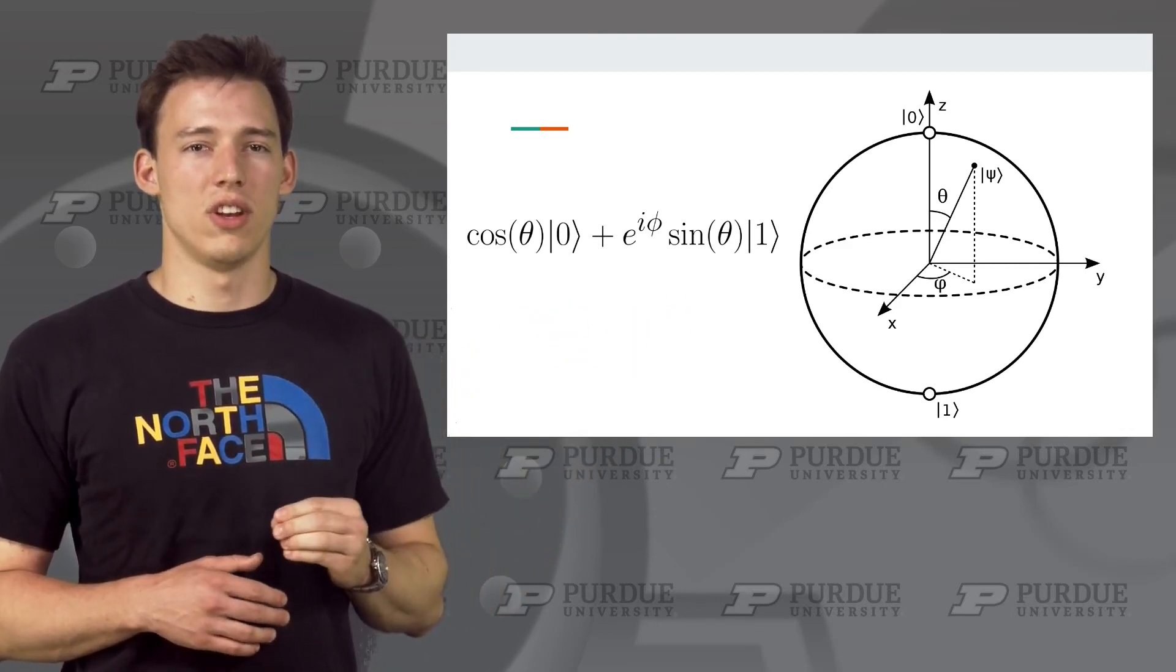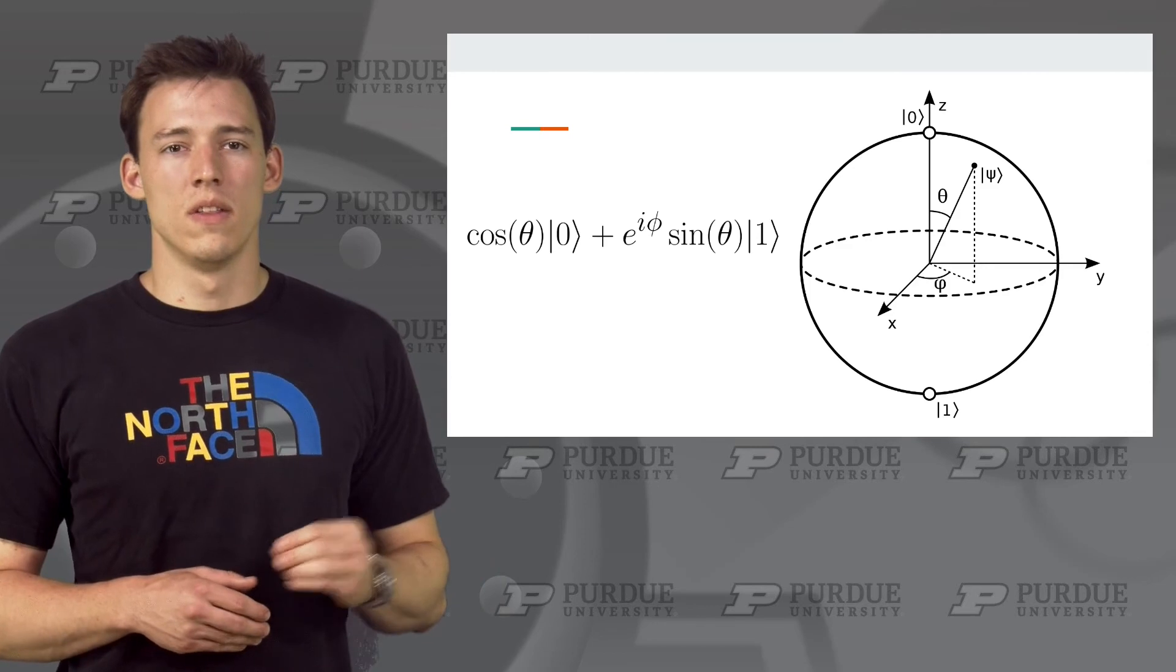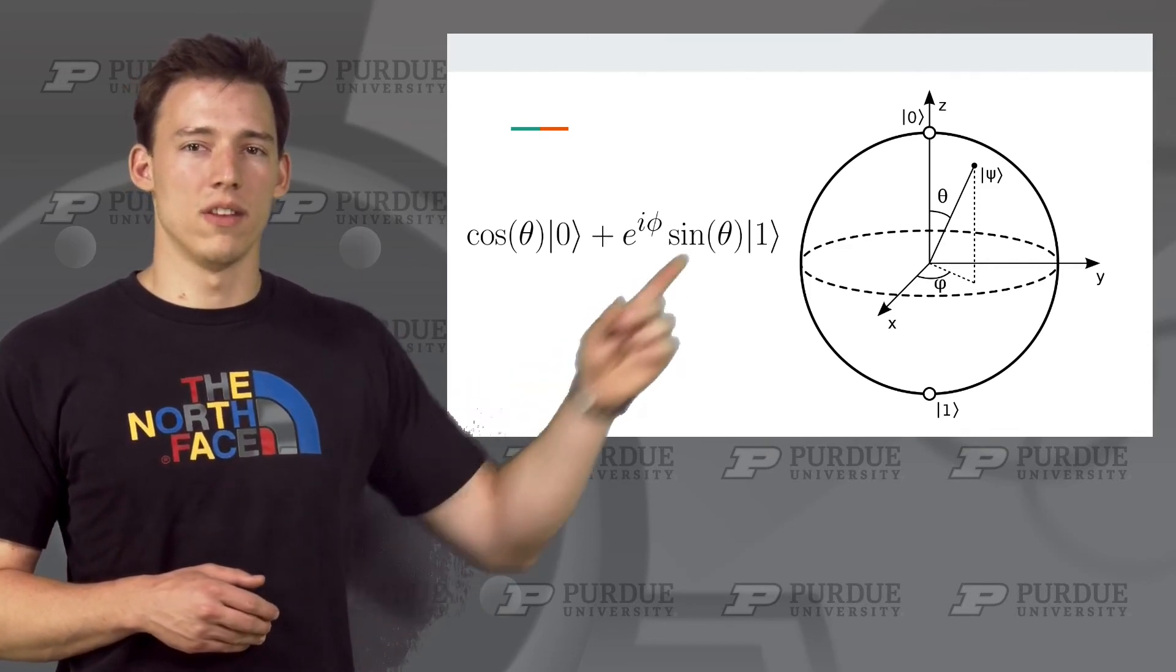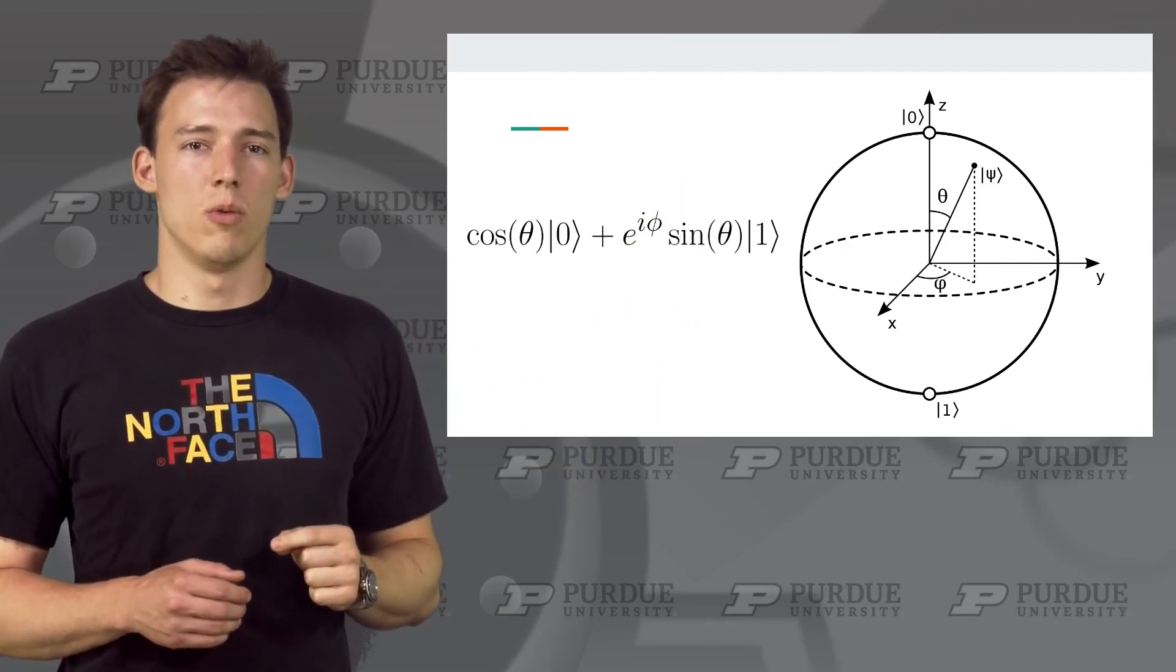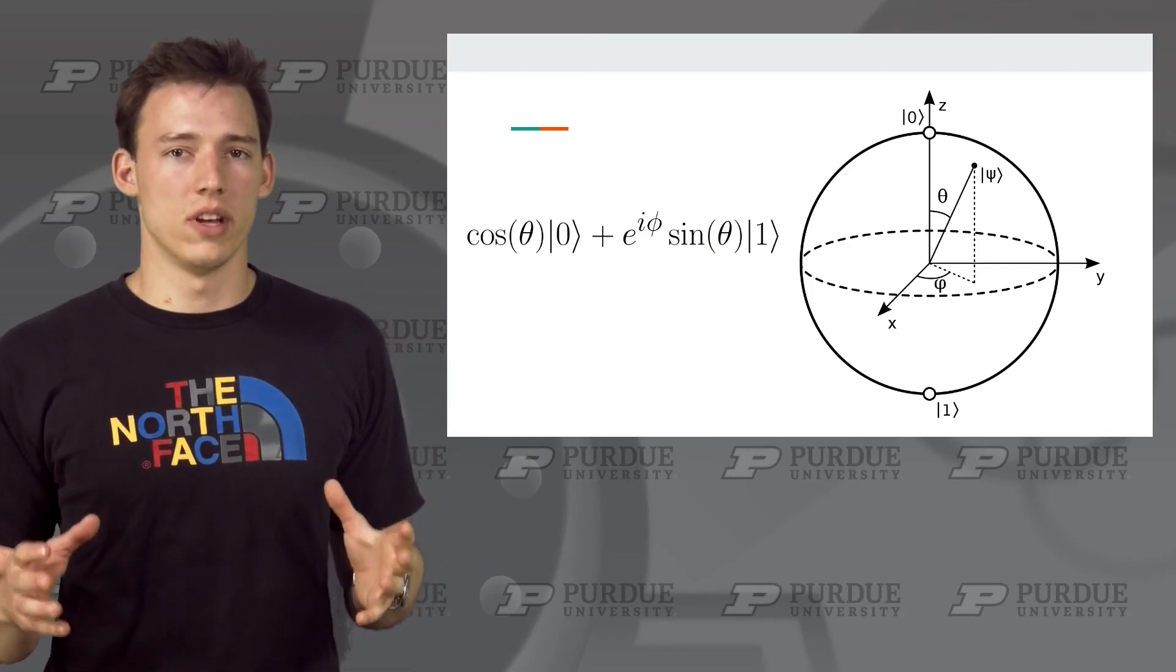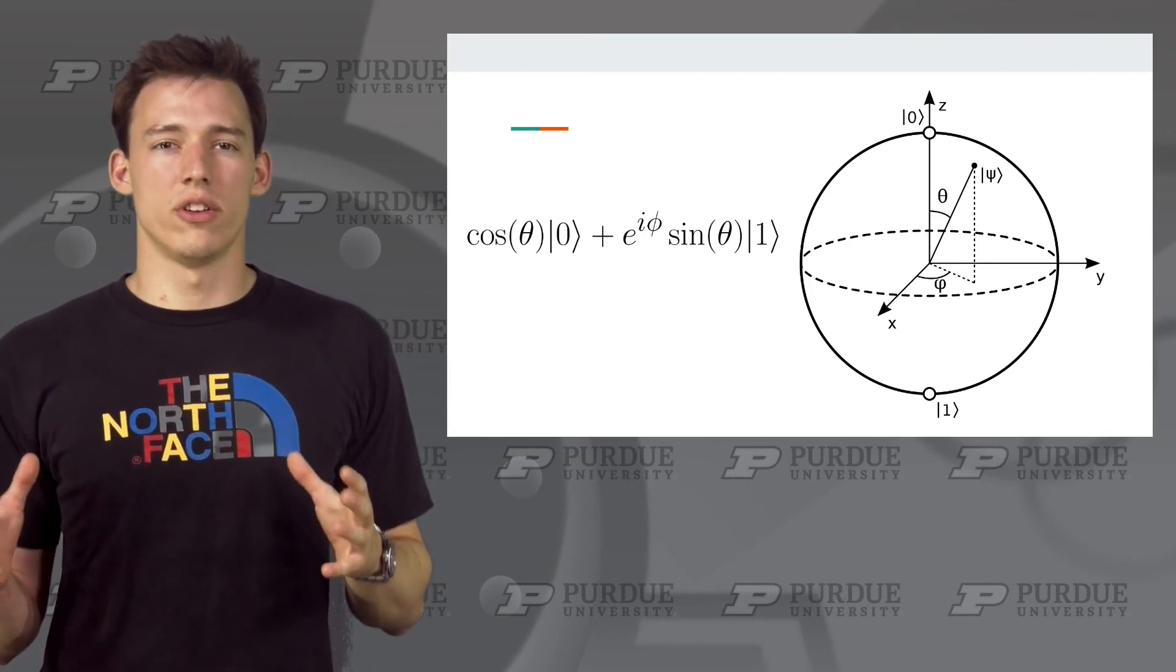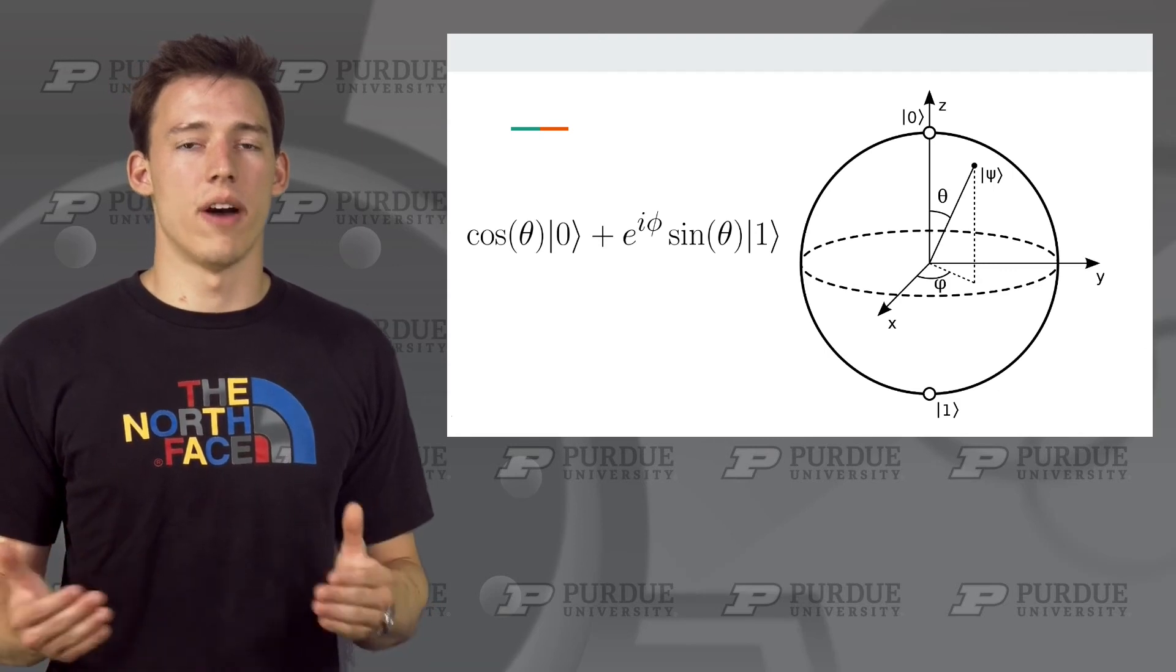The top and bottom of the Bloch sphere represents the 0 and 1 states. Then any other position will be some superposition of the 0 and 1 state. And all we need to do to describe that state is determine the theta and phi values for it.